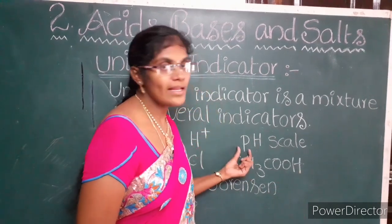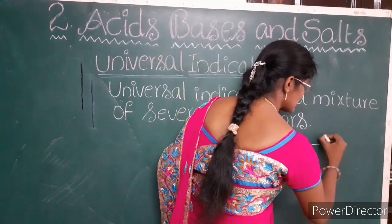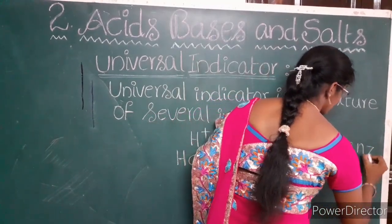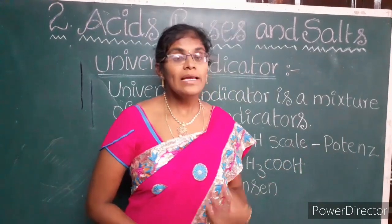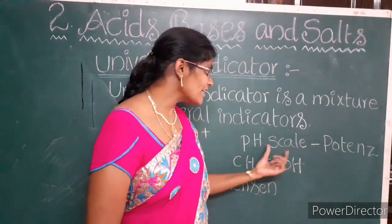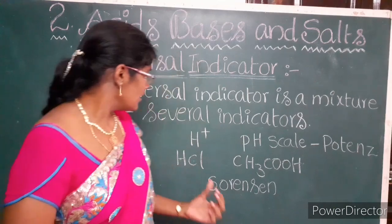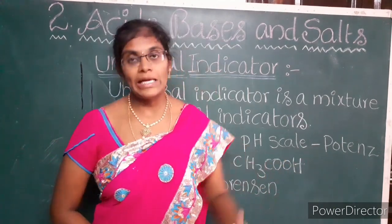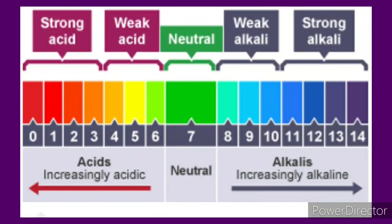The 'p' in pH stands for 'potence.' In German, potence means power. The pH scale changes into different colors depending on the power of the ions. Children, look at this picture — this is the pH scale.